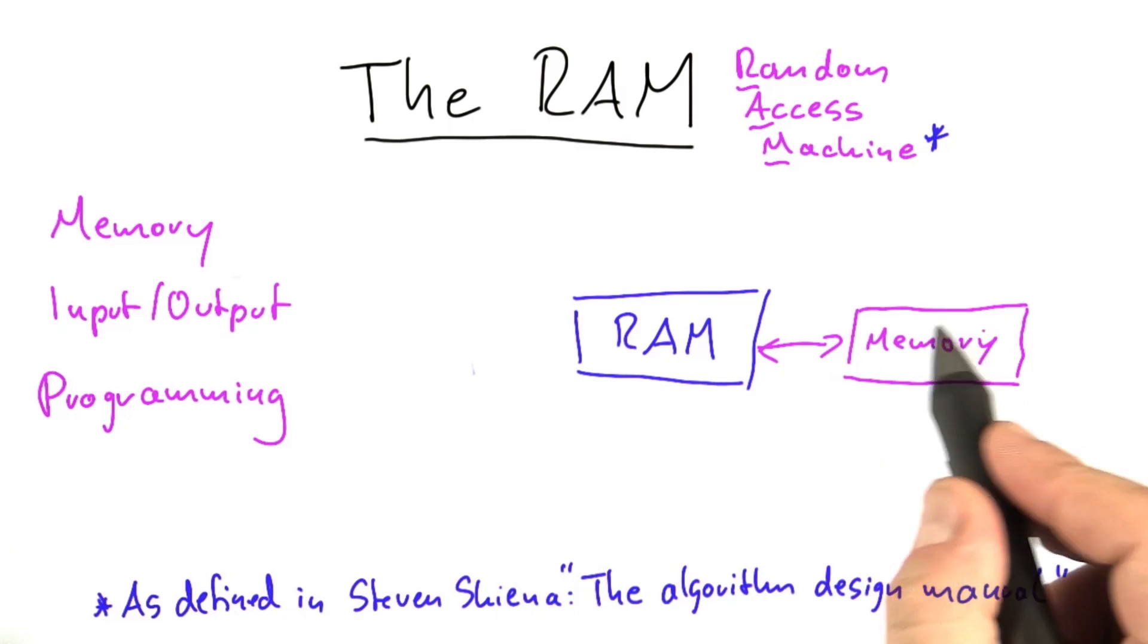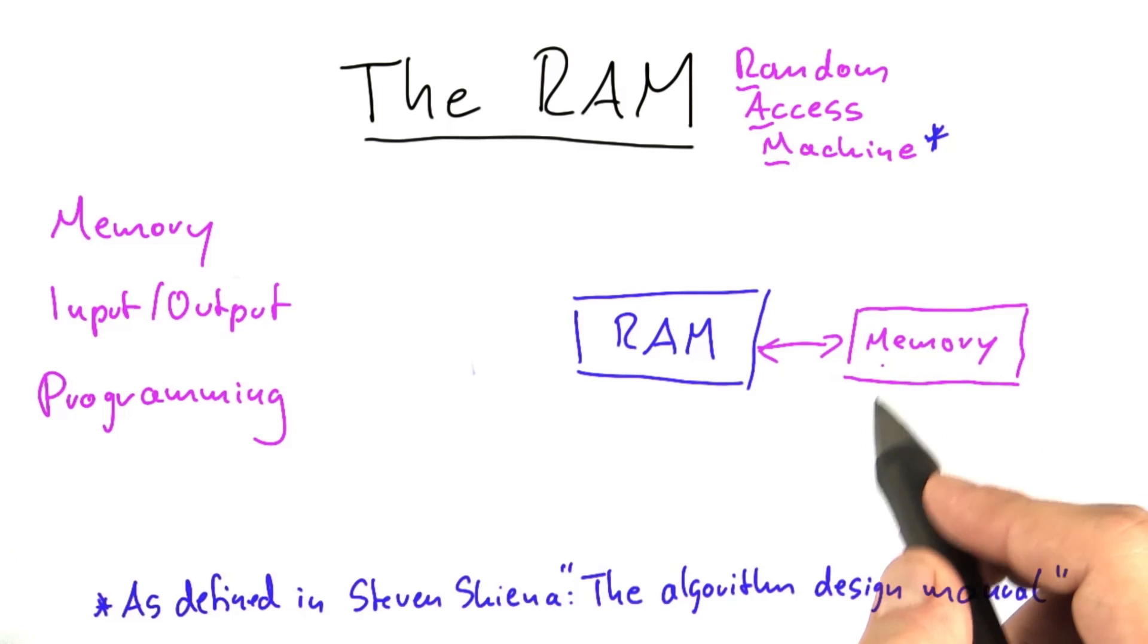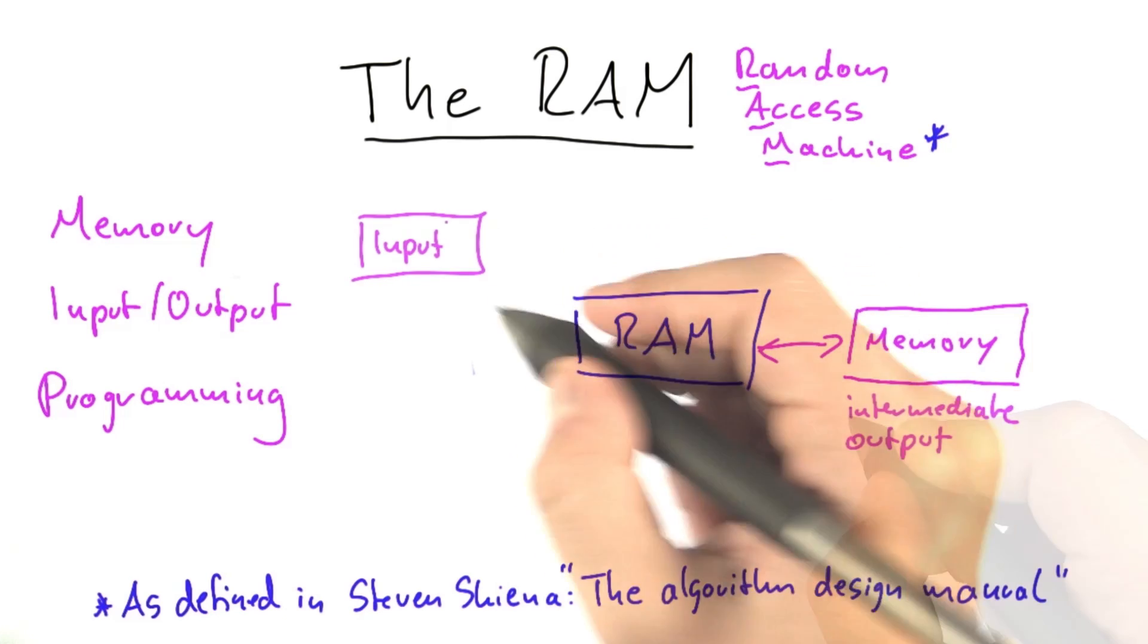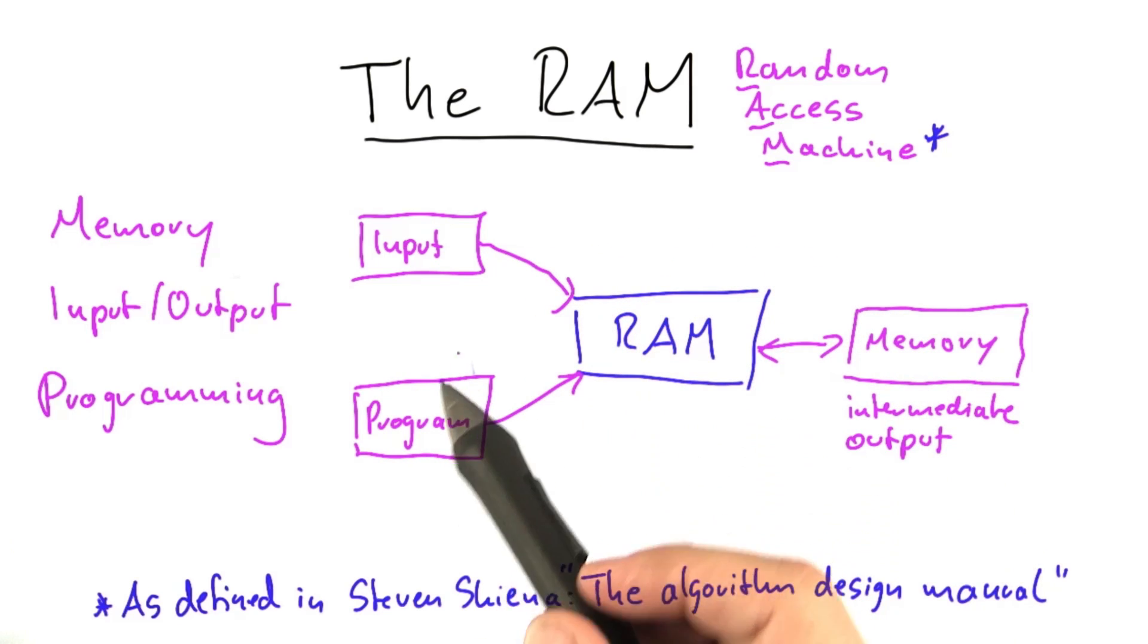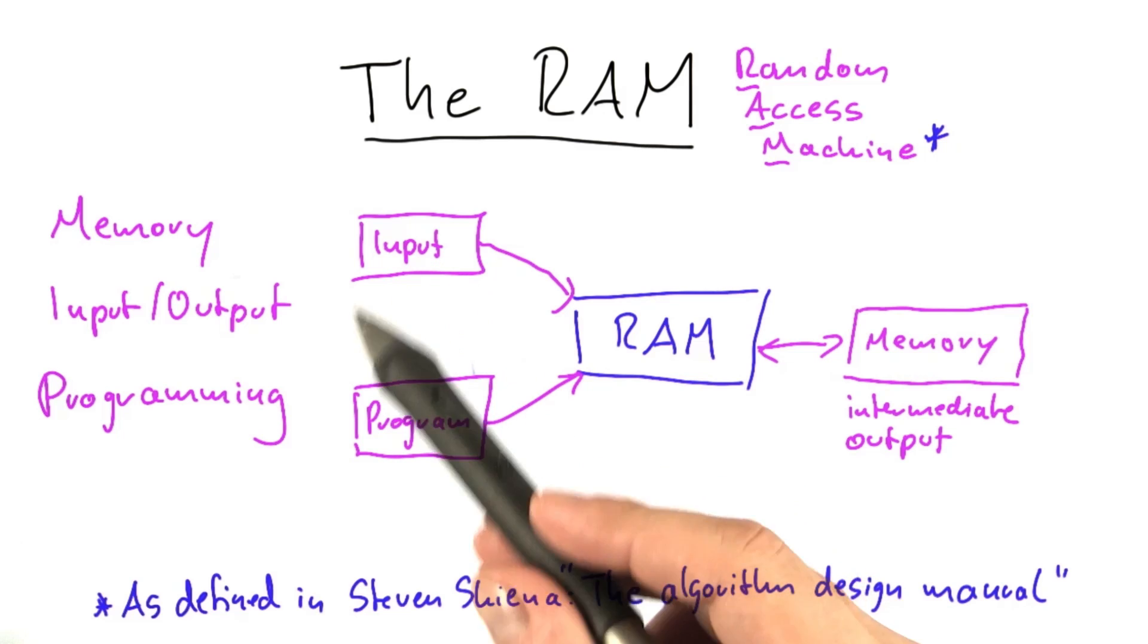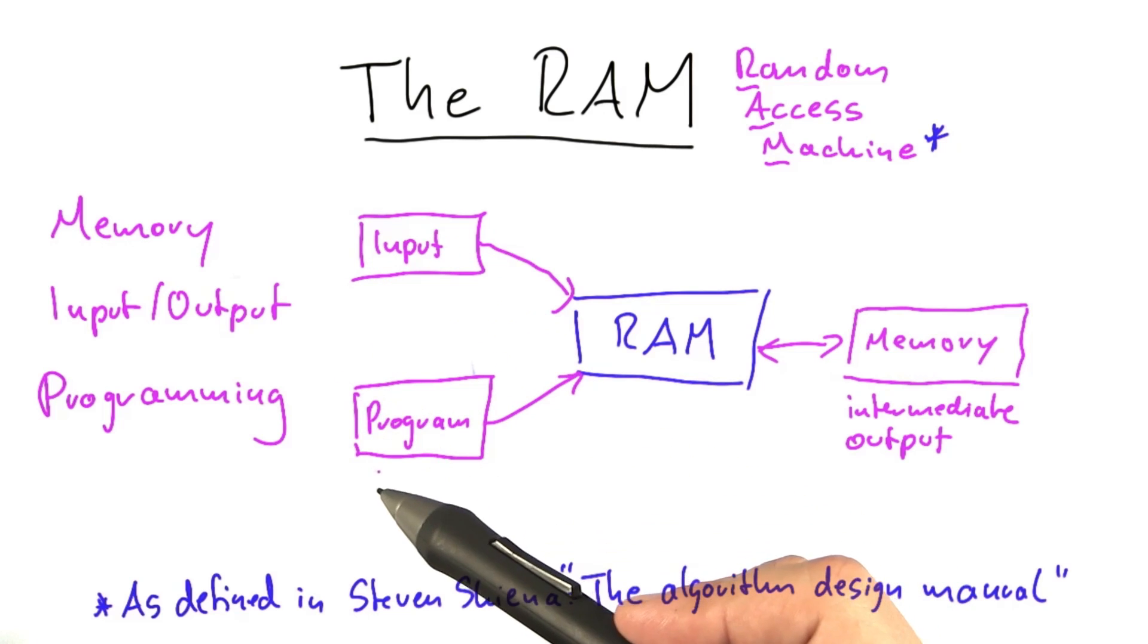We're going to use this memory here for intermediate results and output, and we're going to have a separate memory for the input and a separate memory to hold the program.